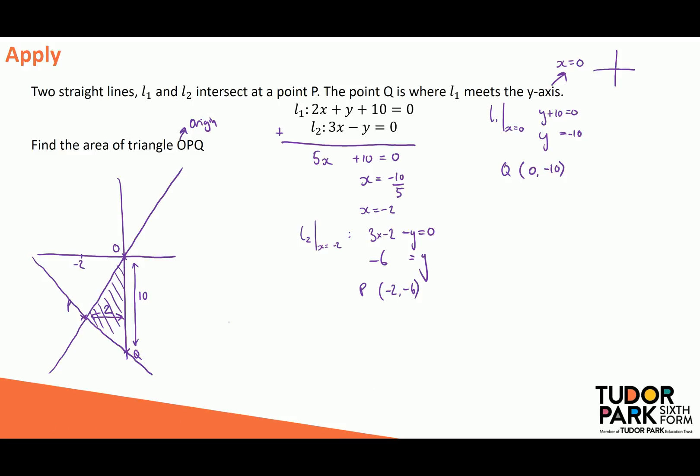So the area of triangle OPQ is going to be equal to a half of 10 times 2, which I would declare to be 10. Now, in this case, it's going to be units squared. Again, I don't know what the units are, but I know that we would be dealing with square units because we've got an area.